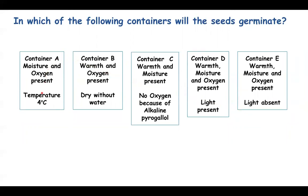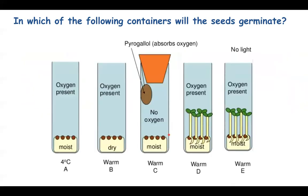In container A, temperature is 4 degrees Celsius, so no germination occurs. In container B, there is no moisture, so no germination occurs. In container C, there is no oxygen, so no germination occurs. In containers D and E, germination will occur because all three conditions — warmth, moisture, and oxygen — are present. Whether or not light is present does not affect germination; light is needed for photosynthesis, not for germination.